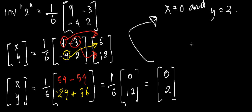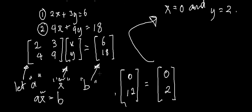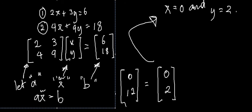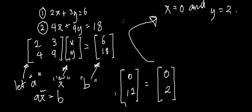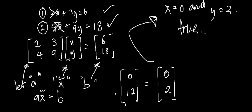If we go back to our original problem, we can do a quick check to make sure that's right. When x is 0, the x-terms cancel out, and we have 3 times y, which is 2, giving 6 — so that's true. And 9 times y, which is 2, gives 18 — so that's also true. We can be confident our answer is right. It's always a really good idea in maths to do these quick checks if you can, because then you can be confident moving on.